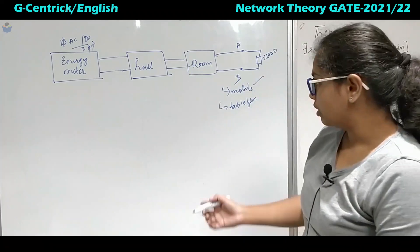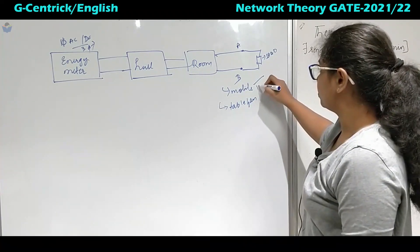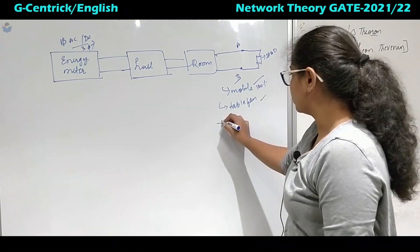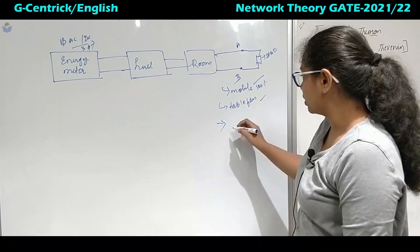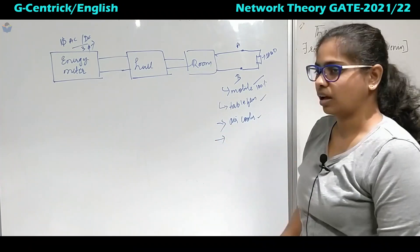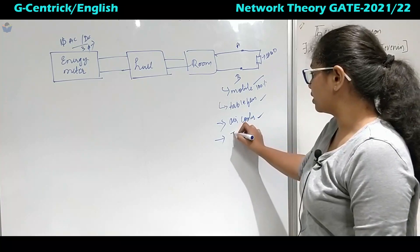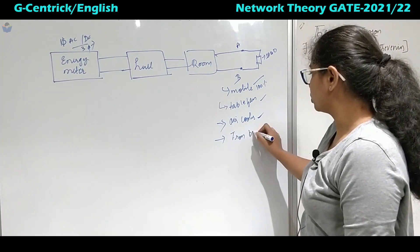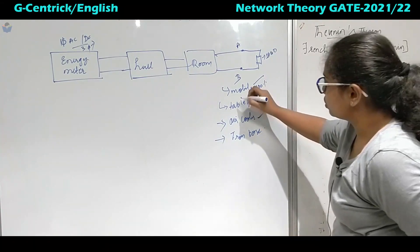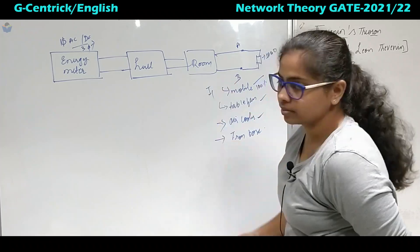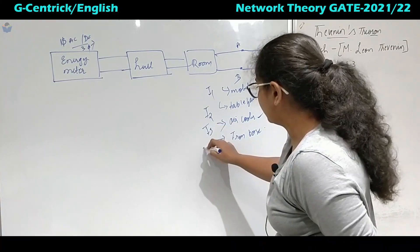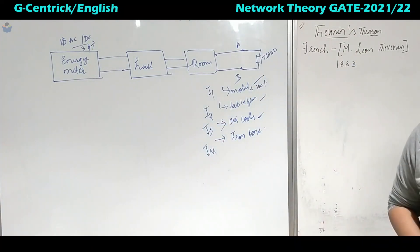First you will complete this mobile charging. Then after completion of this hundred percent you will remove and you will connect table fan. Next you will remove this table fan and you will connect some like air cooler or something. After you get bored of this air cooler you will connect iron box for ironing the clothes. Now, if you observe this one, the mobile draws some current I1, table fan draws I2 current, air cooler draws I3 current and this iron box draws I4 current.